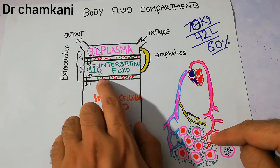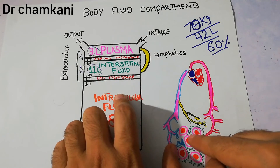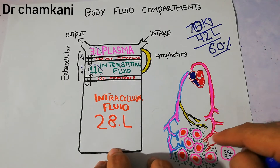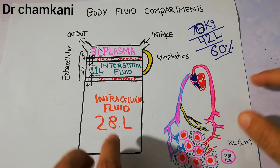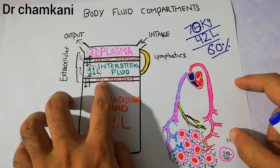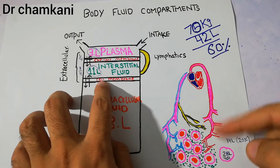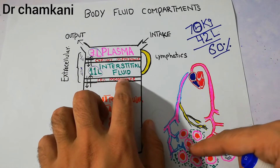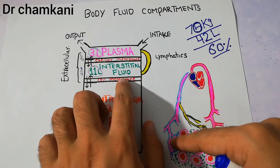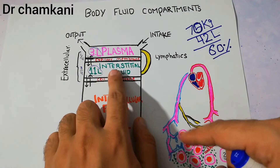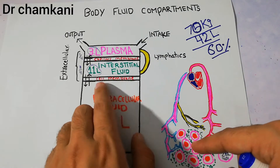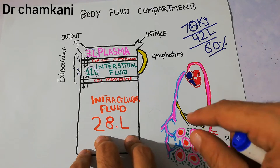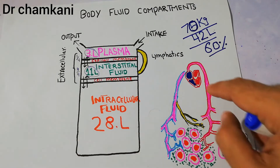Fluid exchange is occurring across the cell membrane. Here is the cell membrane, and these are the cells. Fluid can go into the cell and fluid from the cells can go out, so fluid exchange is occurring across the cell membrane. From the interstitial fluid, fluid comes across the cell membrane into the cells, and from the cells the fluid goes out into the interstitium, from where it goes again to the plasma.